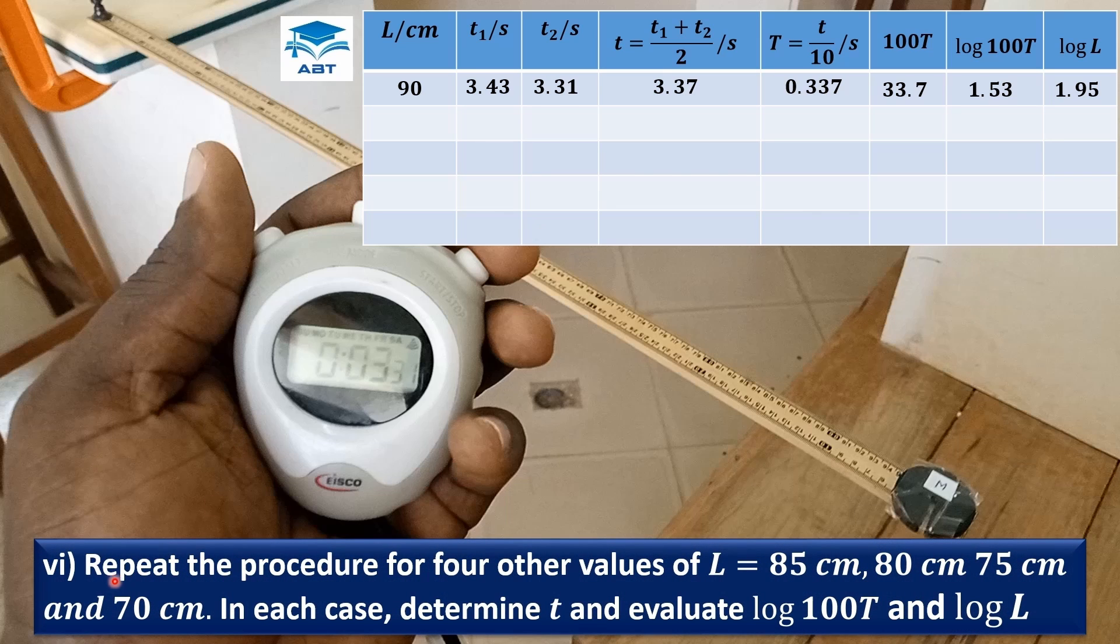And we repeat the procedure for 4 other values of length of 85 cm, 80 cm, 75 cm, and 70 cm. And then tabulate the results.